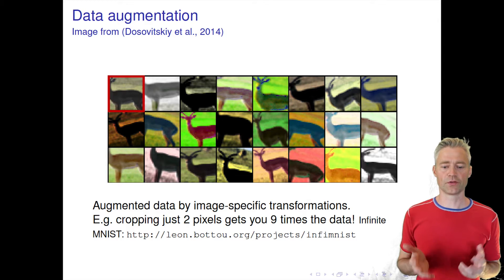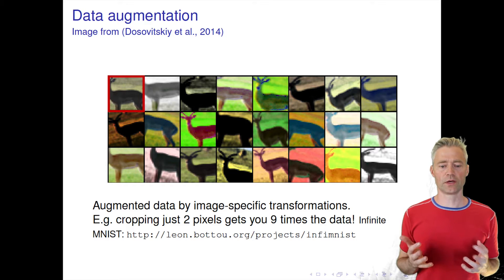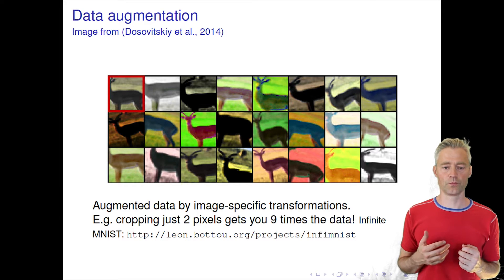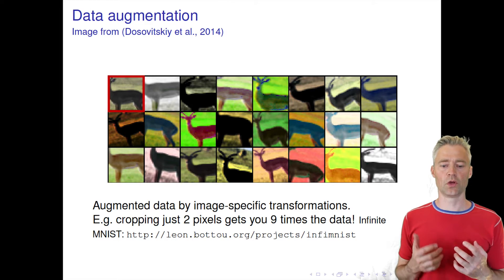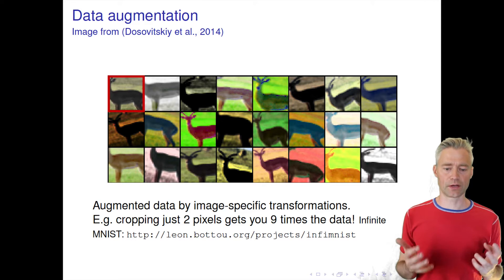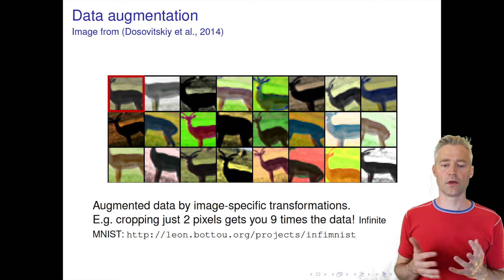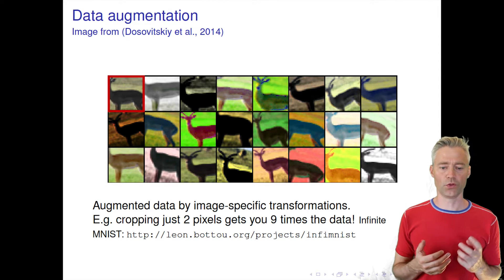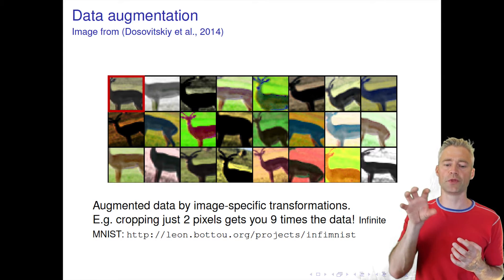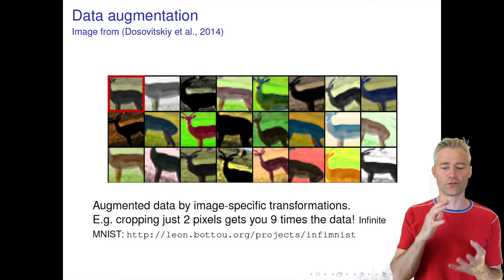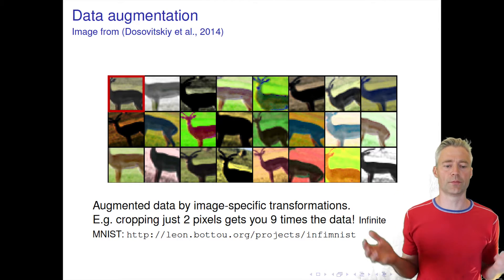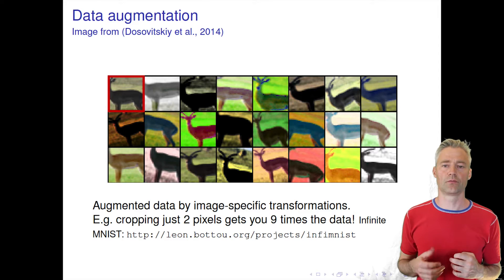I already mentioned data augmentation. Here's an example where we want to build a system that can recognize, for example, deer. We can augment the original image with other images where we crop the image in different ways or change the coloring, and that way we can generate an infinite amount of extra data.